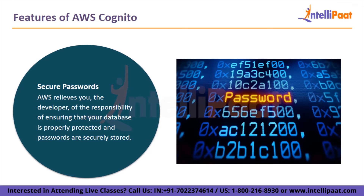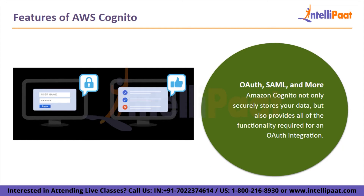Cognito also stores passwords that comply with major compliance standards such as HIPAA. With this, protected health information can be stored in Amazon Cognito. Next is OAuth, SAML, and more. Amazon Cognito not only securely stores your data but also provides all of the functionality required for an OAuth integration. There is no need to write custom code to manage user sessions and Cognito authentication tokens. The Amazon Cognito APIs allow you to simply issue calls to Cognito to validate or obtain new tokens. It also handles password reset requests, account validation, and pretty much any other user maintenance operation. It allows you to validate not only emails but also phone numbers using AWS SNS. Aside from OAuth, you can also integrate with other identity providers. Cognito allows you to easily add additional sign-in options from Facebook to Google and even SAML. You can go through the topic on the difference between SAML and OAuth for a better understanding of both terminologies.